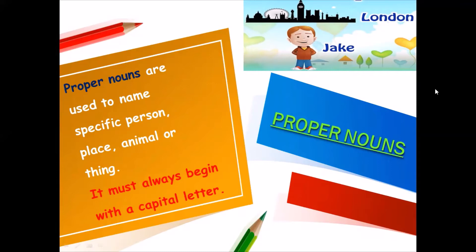I will give you examples for proper nouns. Names of persons like Rohan, Jack, Thema, etc. Names of places such as India, Maharashtra, America, etc. Names of animals like Tommy, Scoopy. Names of things such as Bhagavad Gita, Bible, etc. Okay children, this was about proper nouns.